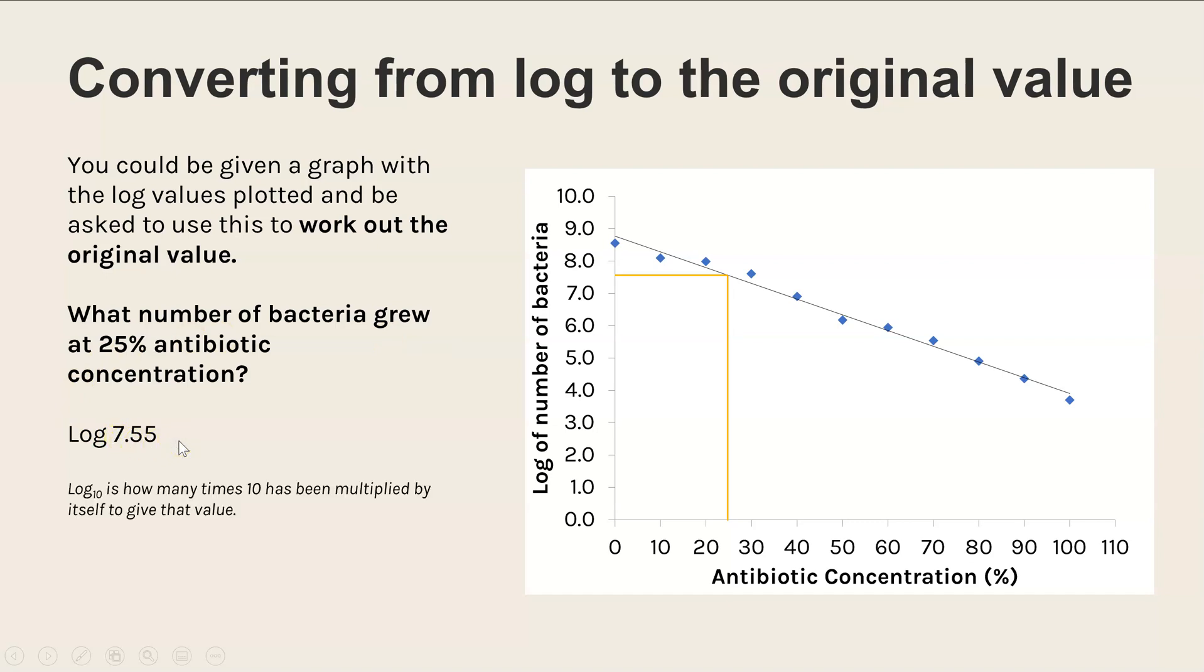Then we need to convert that back into the original. If you remember, we said that log 10 is how many times 10 has been multiplied by itself to give that value. So to convert back to the original we do 10 to the power of your log. So in this case 10 to the power of 7.55, and that comes to this huge number here.